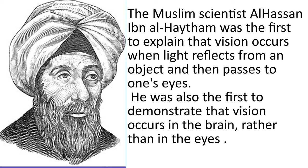The Muslim scientist al-Hassan ibn al-Haytham was the first to explain that vision occurs when light reflects from an object and then passes to one's eyes. He was also the first to demonstrate that vision occurs in the brain rather than in the eyes.